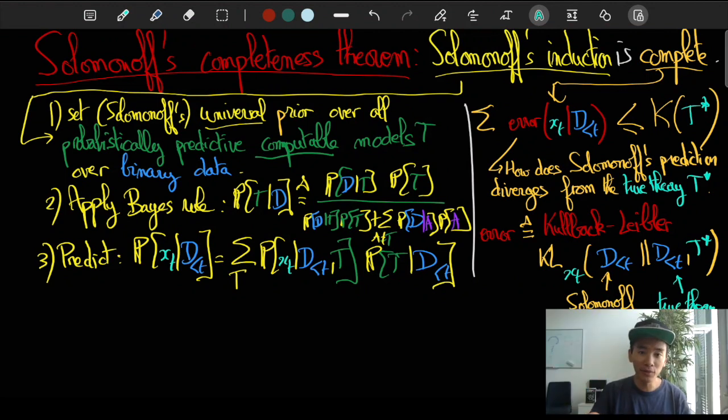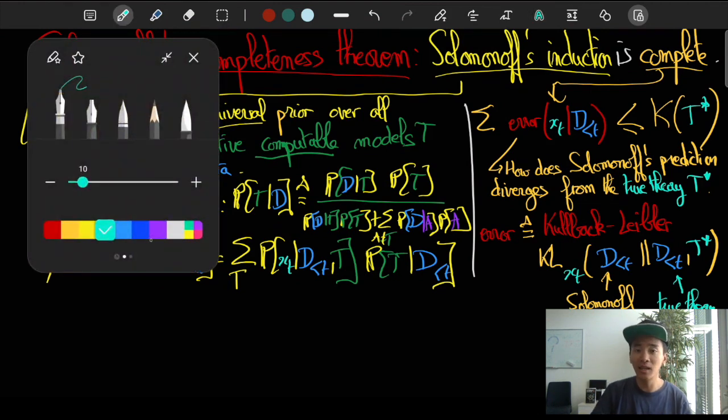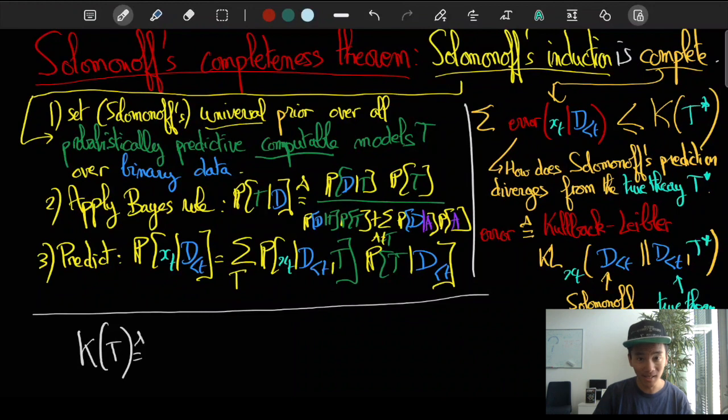And better than this, Solomonoff proved that the total amount of errors was actually small in some rigorous sense. It is actually smaller than the so-called complexity of the true theory T-star.